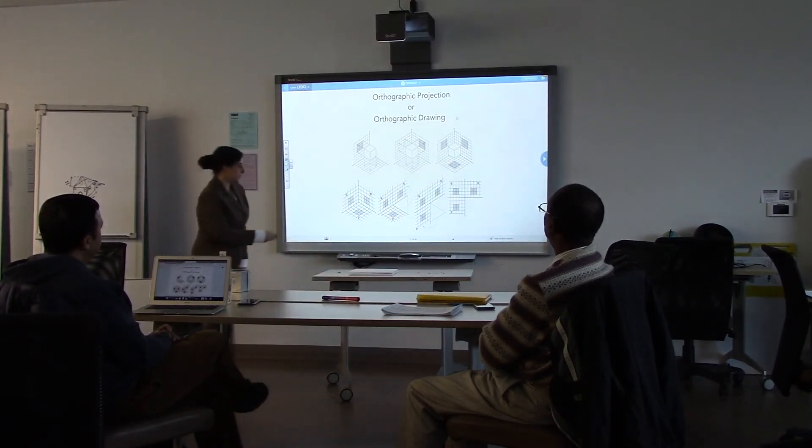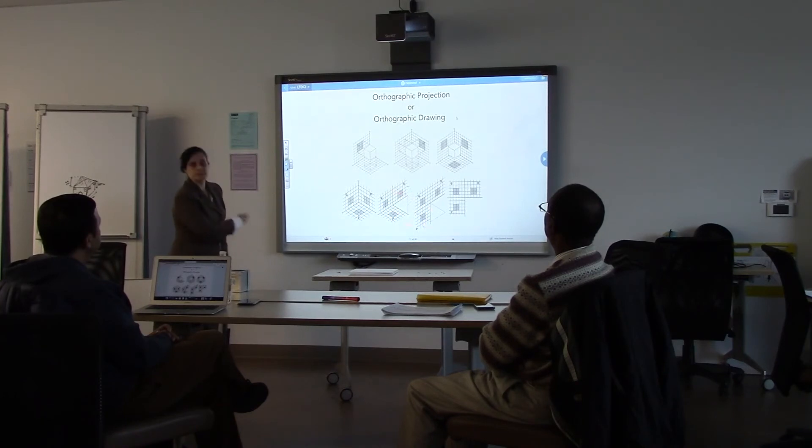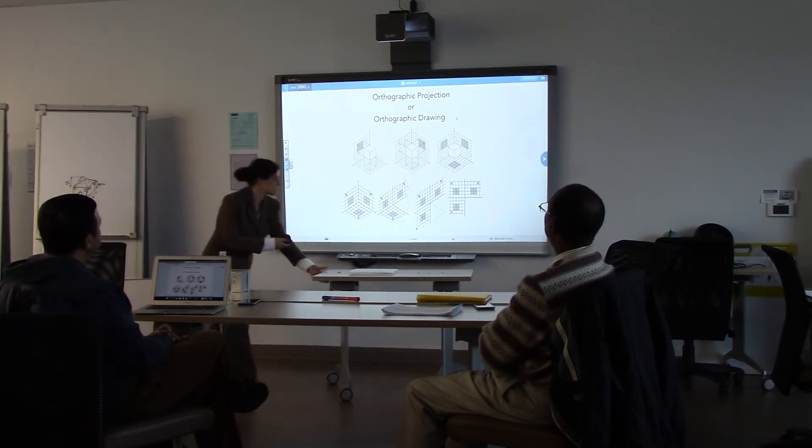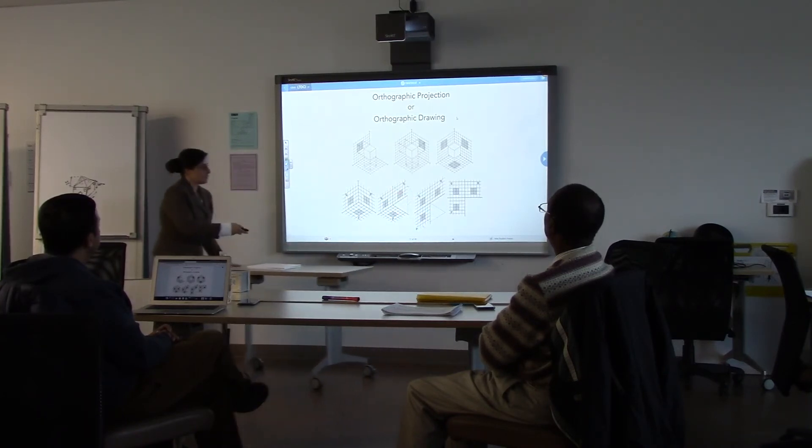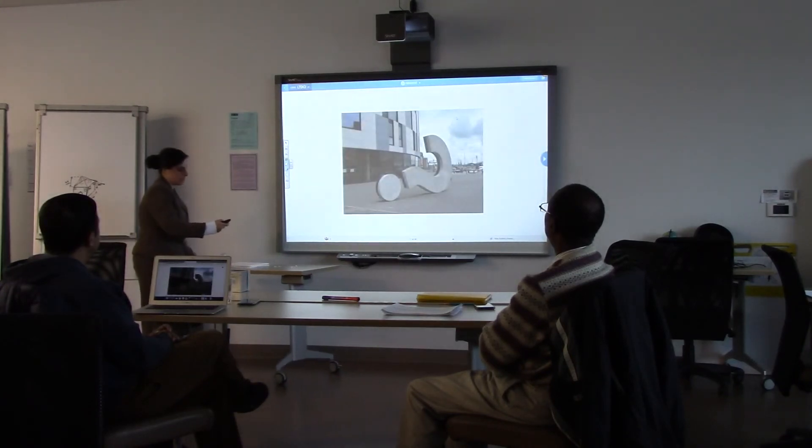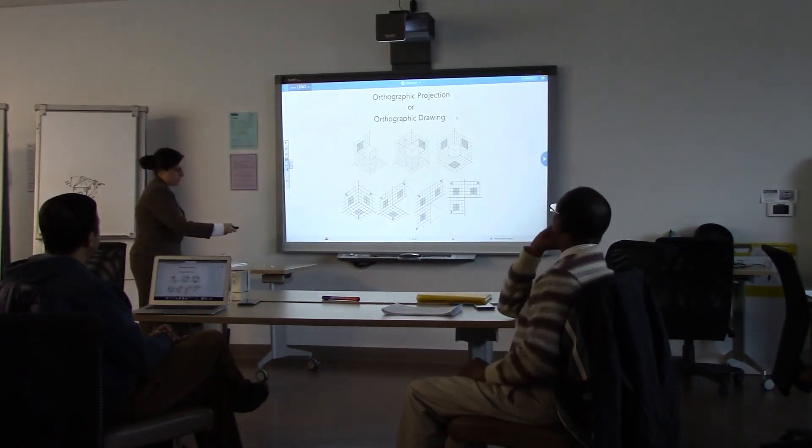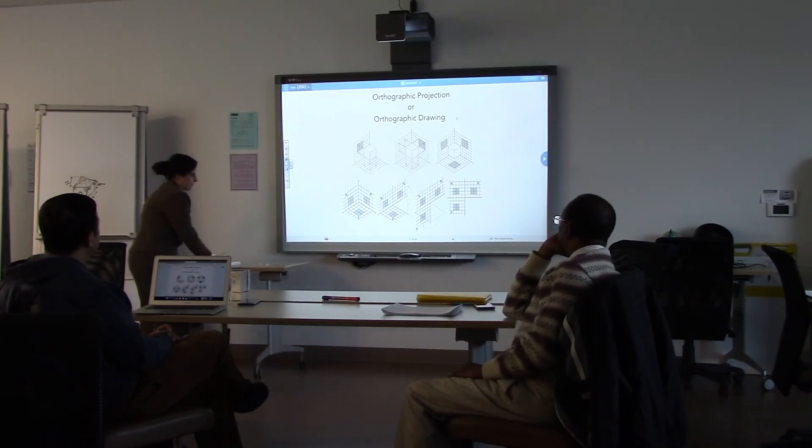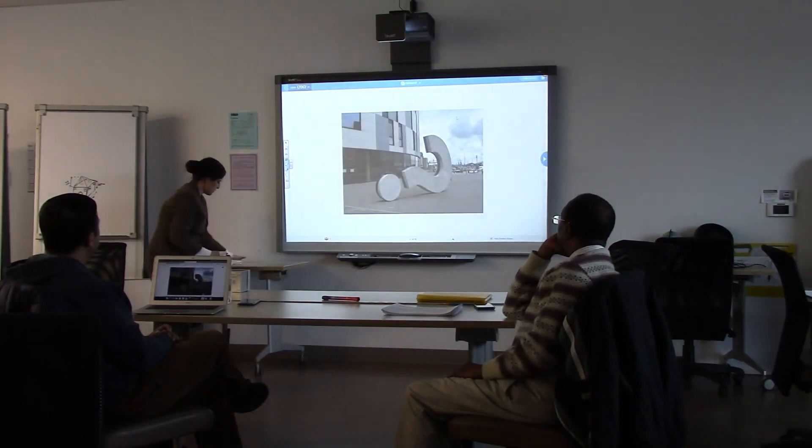As you see here, this exactly happened here. It was unfolded that side. It is unfolded this side. And we have these all projections here. Okay, before starting the practice, anyone have any questions?